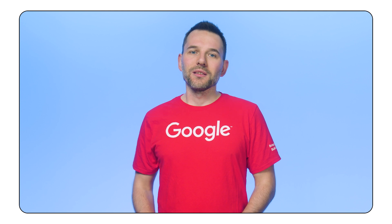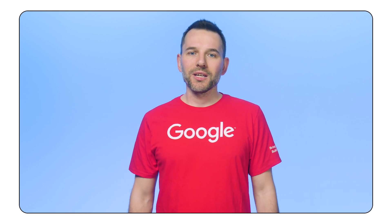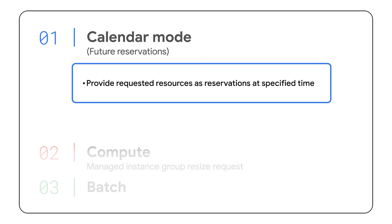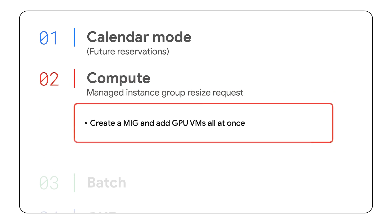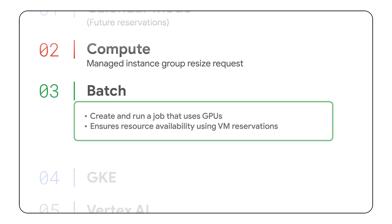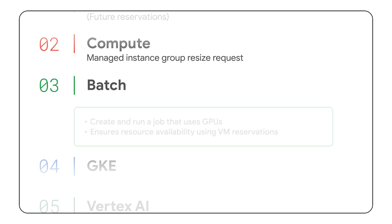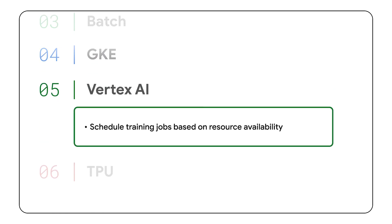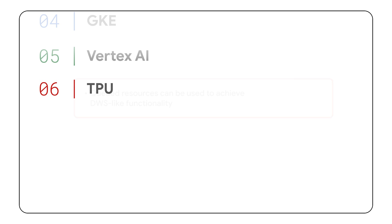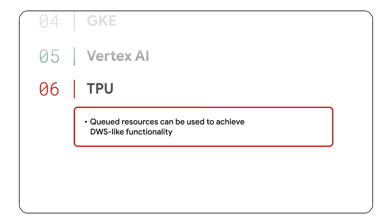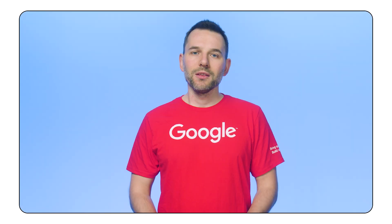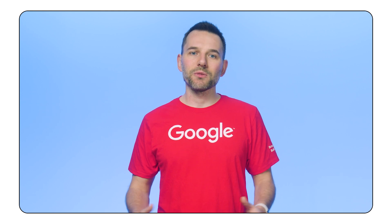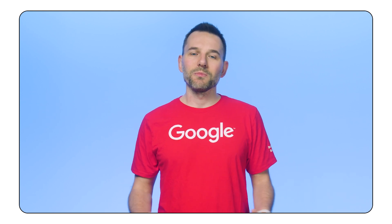As you can see, there are many ways to leverage the power of Dynamic Workload Scheduler — from planning resource provisioning through future reservations, to letting it take care of collecting the resources you need to start a one-off job. For every product, the interface, requirements, and options are a bit different, so make sure to follow our documentation for the product you want to use. The world of AI computing is changing extremely fast — make sure to subscribe to this channel so you don't miss anything.